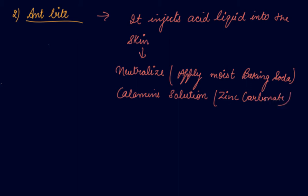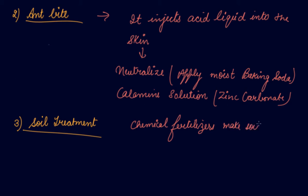The third neutralization that we use in everyday life is soil treatment. Chemical fertilizers that you use in soil make the soil acidic. If the soil is very acidic, it will not be able to grow plants.